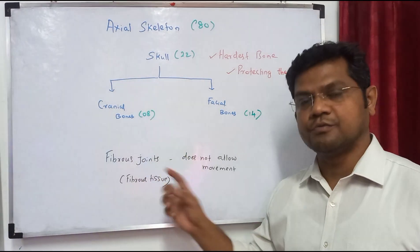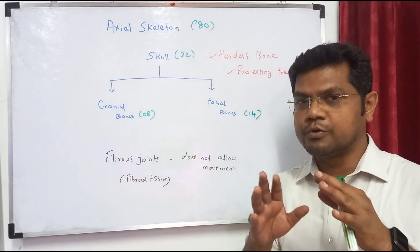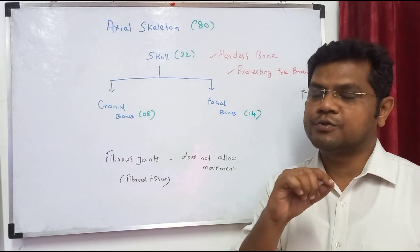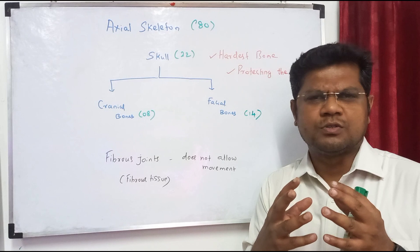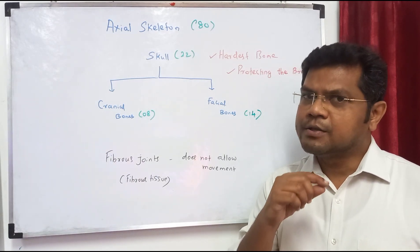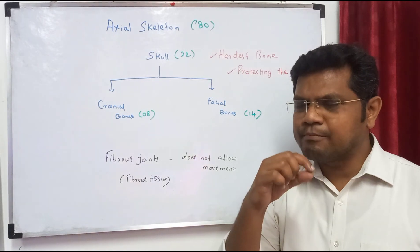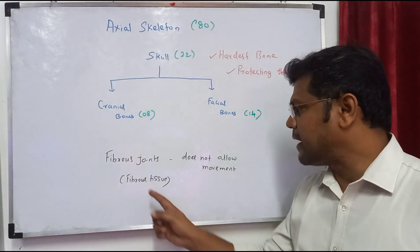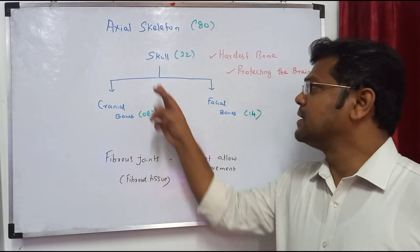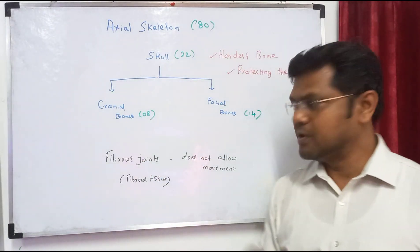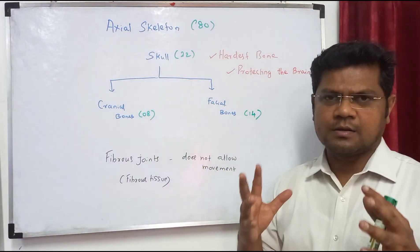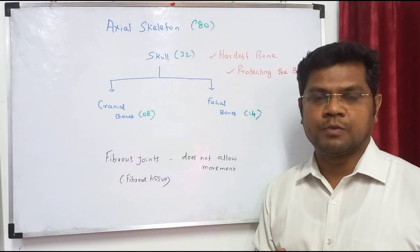Fibrous joints are present in the bones of the skull. In the joint there is a gap, and in that gap there is fibrous tissue. Fibrous joints are present in the skull.